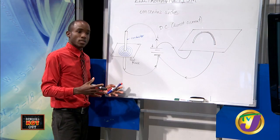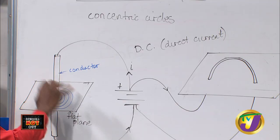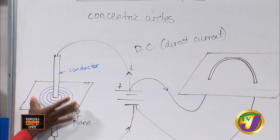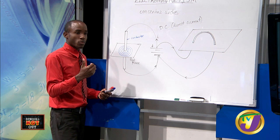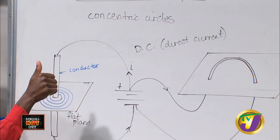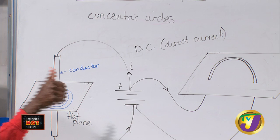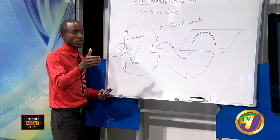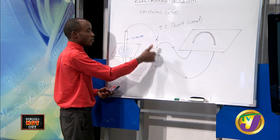Concentric circles are essentially circles of different diameters but sharing the same center, giving a pattern that looks like this. How does a magnetic field set up around this? It is given by what is called Maxwell's screw rule or the right-hand grip rule. Your thumb indicates the current flow direction. Your curled fingers indicate how the magnetic field would set up around this conductor.